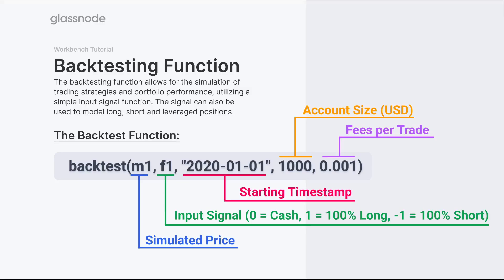The actual function you'll find inside Workbench is simply called backtest, and it takes five different inputs. The first is the simulated price — so if you're looking at Bitcoin, this would be the Bitcoin price. If you're trading Ethereum or even the ETH-BTC ratio, this metric would be whatever price you're looking to trade off. The second input is the input signal, and we'll spend a lot of time in the examples exploring this.